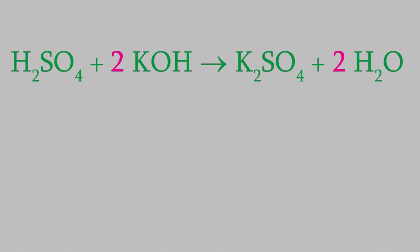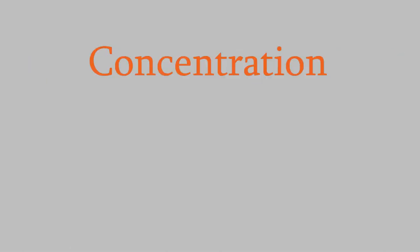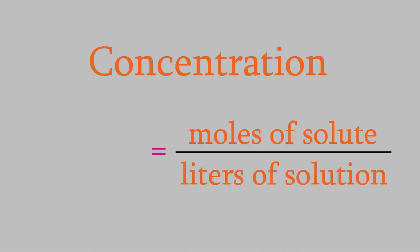One of the things we're especially interested in when dealing with acids and bases is their concentration. A concentrated acid or base is much more powerful and corrosive than a dilute one. The important quantity is how many moles of solute are in a given volume of solution — specifically, moles per liter. This is called the molarity, symbol capital M.